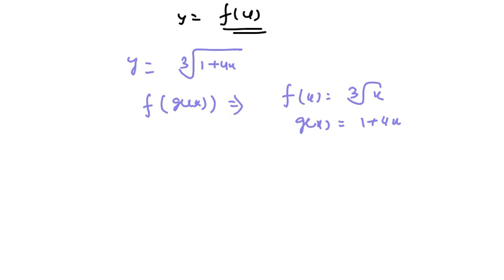So the composite function is in this form. Now we need to find the derivative dy/dx. We have the composite function in the form y = f(g(x)), so dy/dx will be equal to f'(g(x)) multiplied by g'(x).